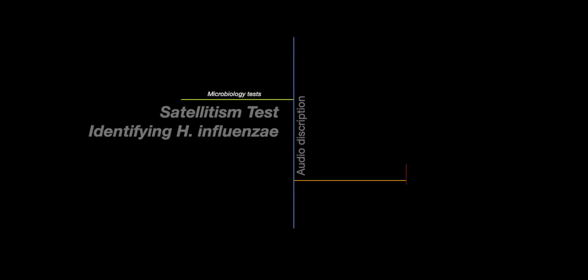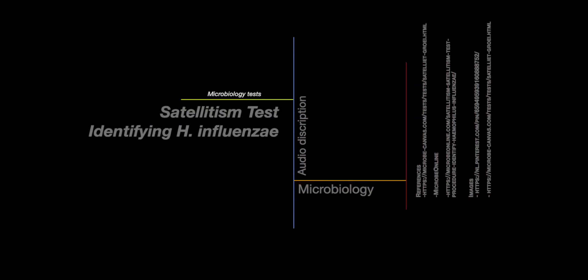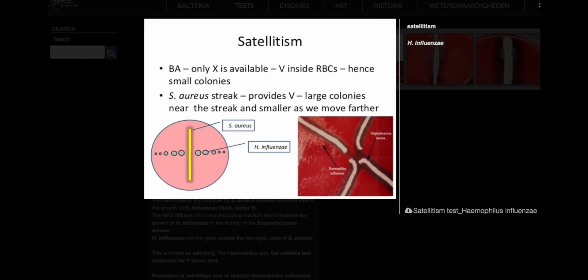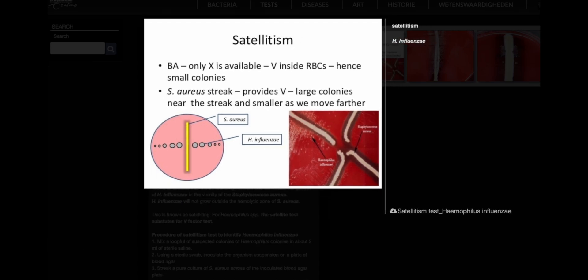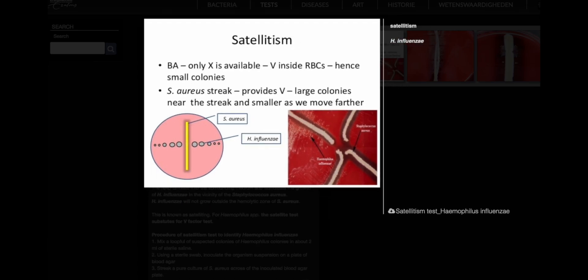Satellitism Test for Haemophilus Influenzae. Most Haemophilus species do not grow on standard 5% sheep blood agar. While this agar contains haemin, it lacks NAD, which is essential for their growth.